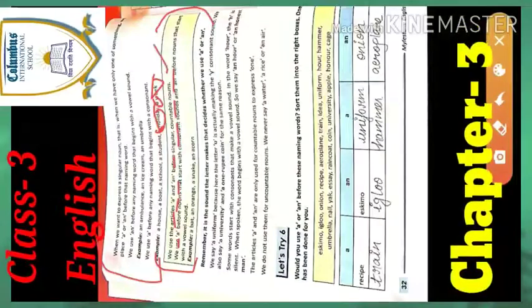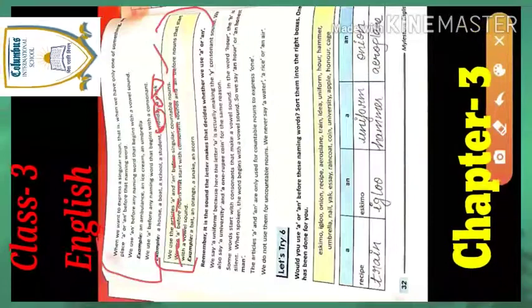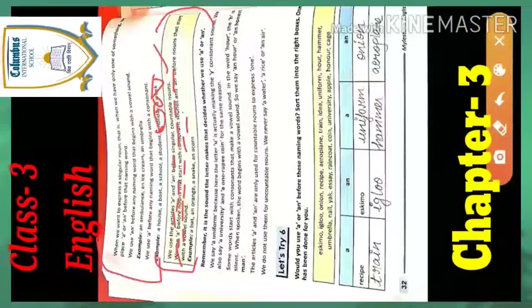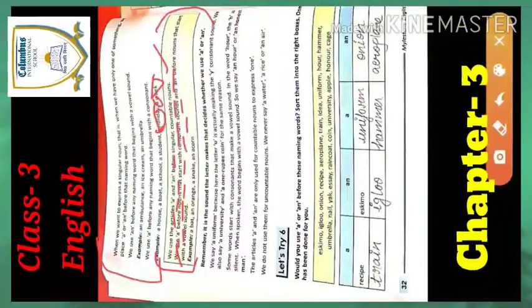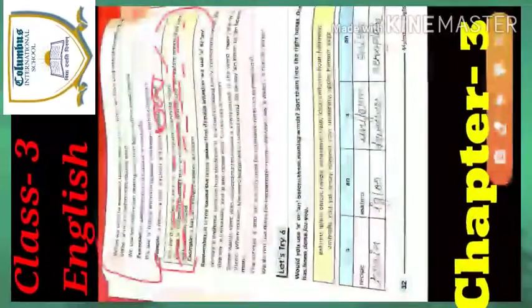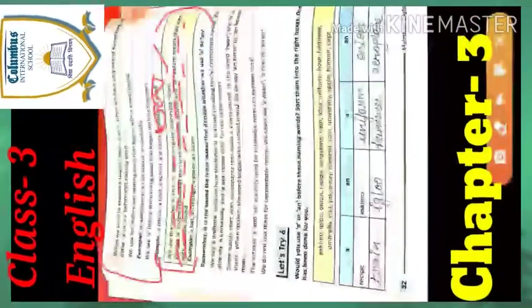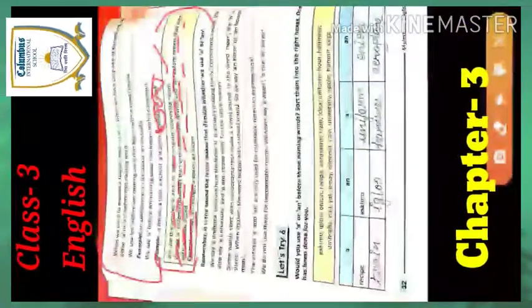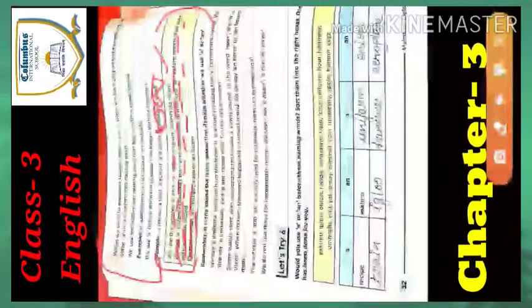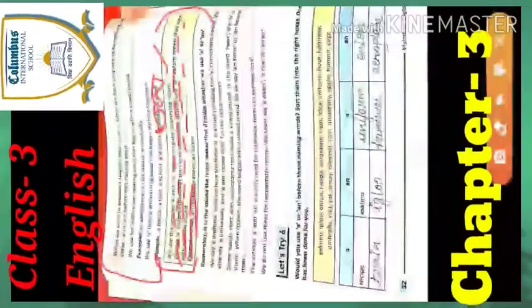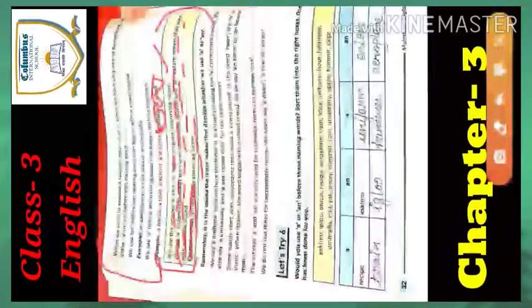We use 'a' before a noun that starts with a consonant sound, and 'an' before a noun that starts with a vowel sound. Examples: 'a bat' — consonant sound; 'an orange' — vowel sound; 'a snake' — consonant sound; 'an icon' — vowel sound.